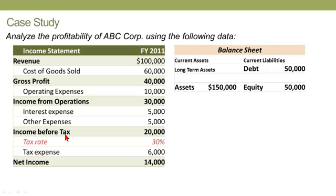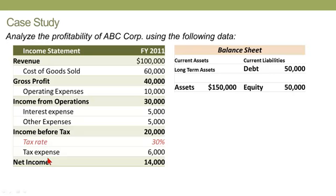Then we have income before tax, also called pre-tax income — in this case $20,000. Assuming a tax rate of 30%, which you wouldn't typically see on the face of the income statement, that produces a tax expense of $6,000. Taking pre-tax income minus the $6,000 tax expense gives us net income, sometimes colloquially called the bottom line — net income after tax — just as revenue tends to be the top line.